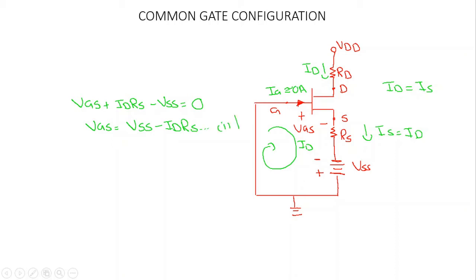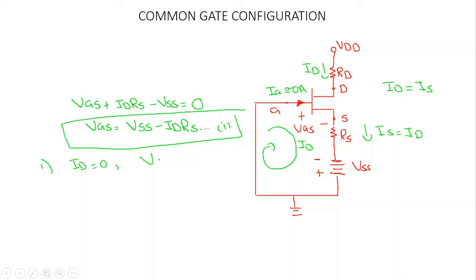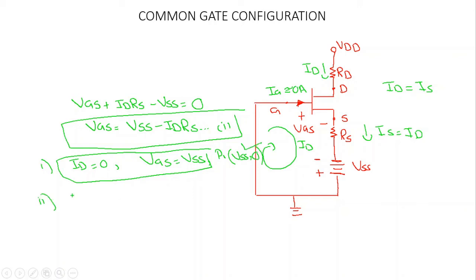Simplifying, we get VGS = VSS − ID·RS. This is equation number one, our network equation. This is the equation of a straight line, so we need only two points. When ID = 0, we have VGS = VSS — that is point number one: (VGS = VSS, ID = 0).